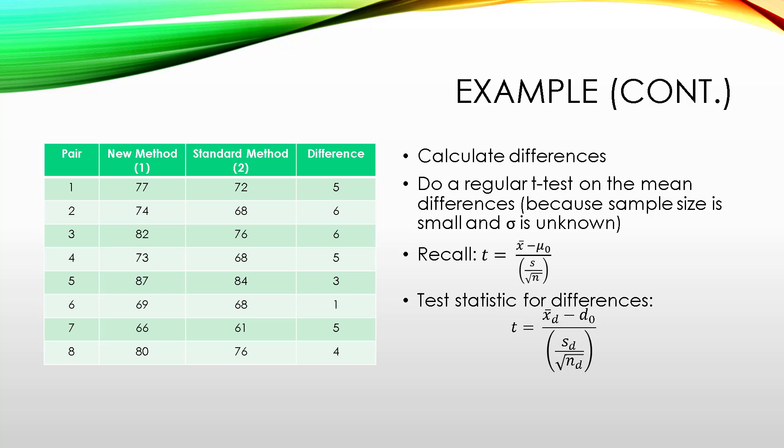Also, under the null hypothesis, we're saying that there is no difference under the null hypothesis, so that d subscript 0 symbol is actually just going to be 0, for our example.